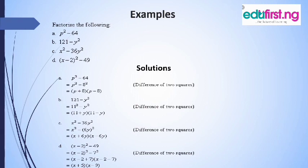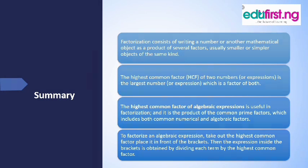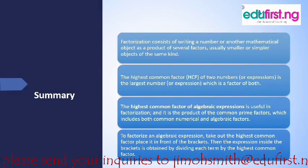In summary, we made ourselves understand that factorization consists of writing a number or mathematical object as a product of several factors, using smaller or simpler objects of the same kind to break the particular question down to the barest minimum. We also understood that we can use the concept of HCF to factorize, and we can use the concept of difference of two squares to factorize. When factorizing an algebraic expression, the HCF is placed in front of the bracket, and the expression inside the bracket is obtained by dividing each term by the HCF.